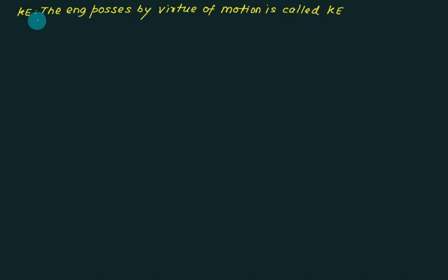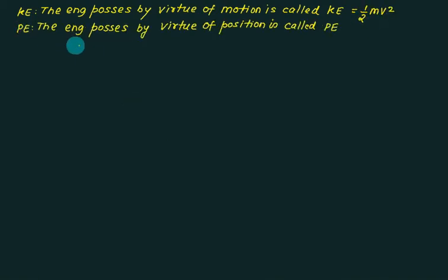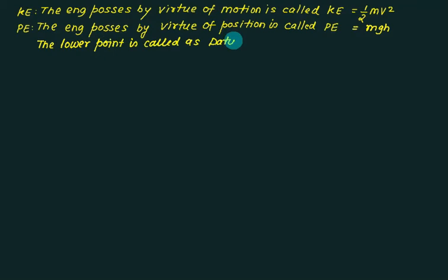Kinetic energy is defined as energy possessed by virtue of motion and is given by half mv squared, where m is mass and v is the velocity. Potential energy is energy possessed by virtue of position, given by mgh. It is measured relative to the lowest point, called the datum, where h is assigned as zero.